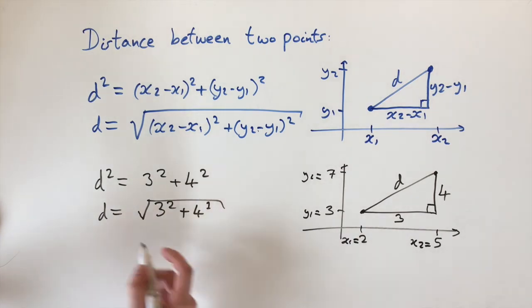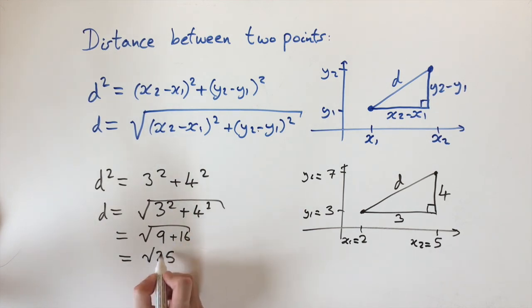So now just to work out d, we just need to simplify this. So 3 squared is 9, 4 squared is 16. And then we add this together, we get 9 plus 16 is 25. So d equals the square root of 25, which is very convenient because this equals 5. So the distance between these two points is exactly 5.